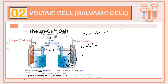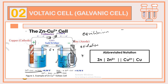This is the abbreviated notation of the voltaic cell: Zn | Zn²⁺ || Cu²⁺ | Cu. Zinc forms into zinc ions, then the salt bridge, and then copper ions form solid copper. You cannot see electrons in the abbreviated notation. I hope you understood that — please stay tuned for lecture part 3, thank you so much for listening.